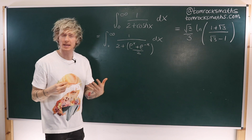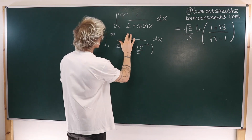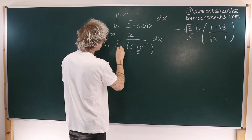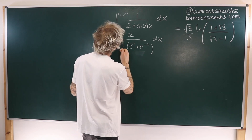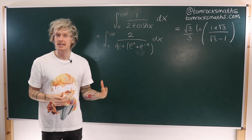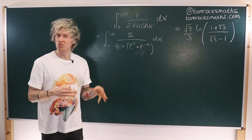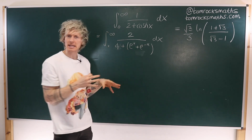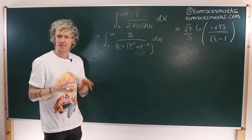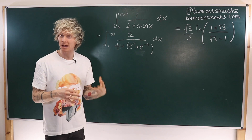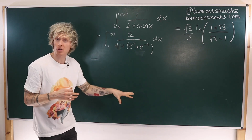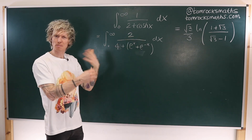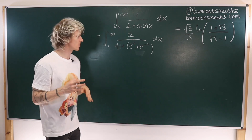We can tidy this up a little bit if we multiply through by 2 on the numerator and denominator — this becomes a 4 and the 2 disappears. Then a very useful trick when you have an exponential function with a positive and a negative term, e to the x and e to the minus x, is to multiply through by e to the power of x, because it will remove the negative term and leave you with just positive powers of the exponential.